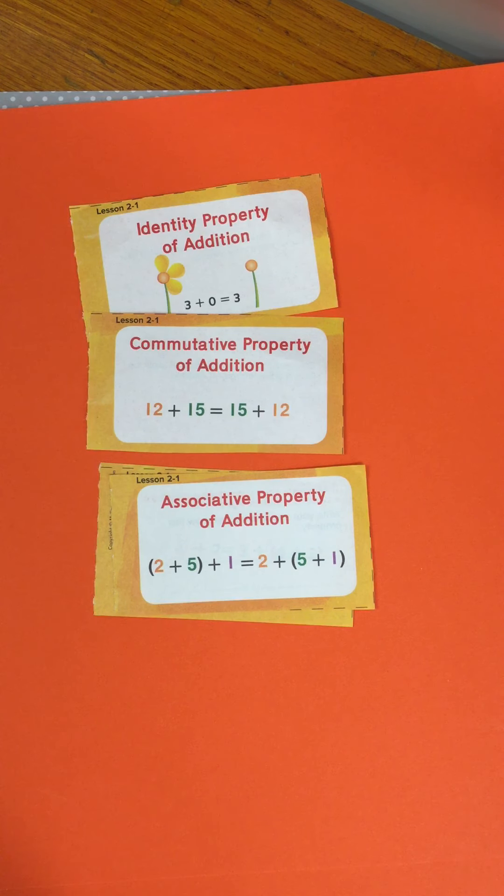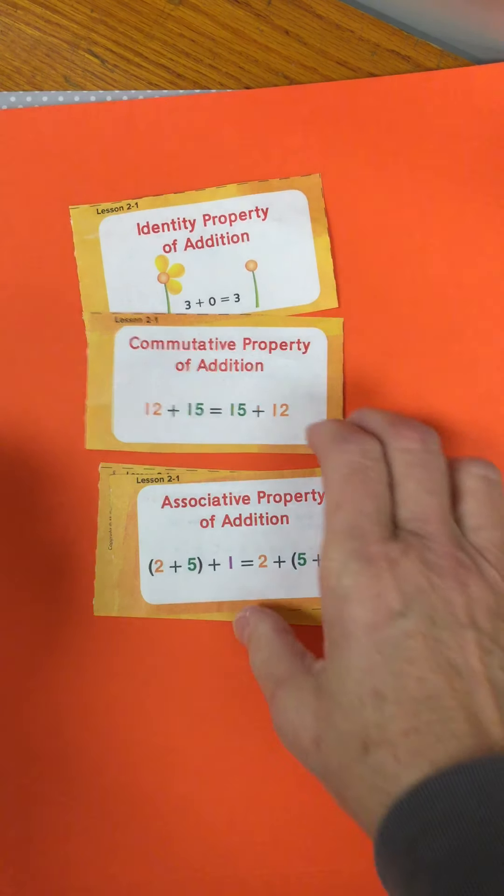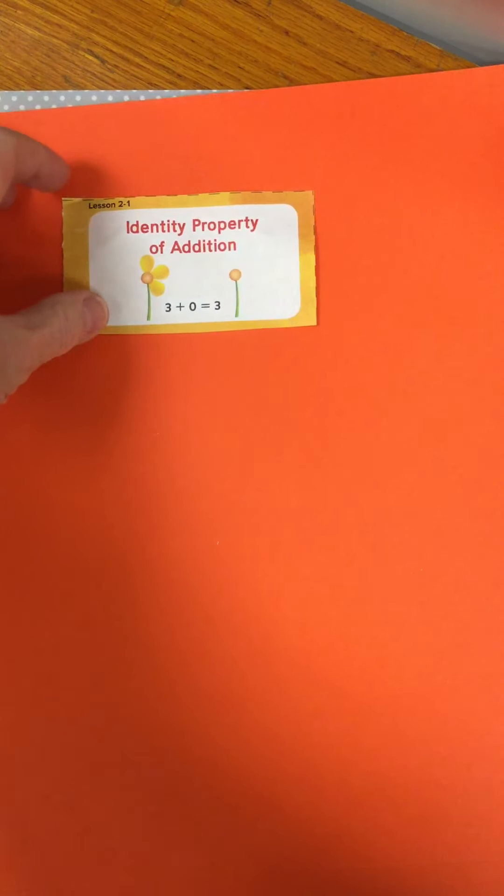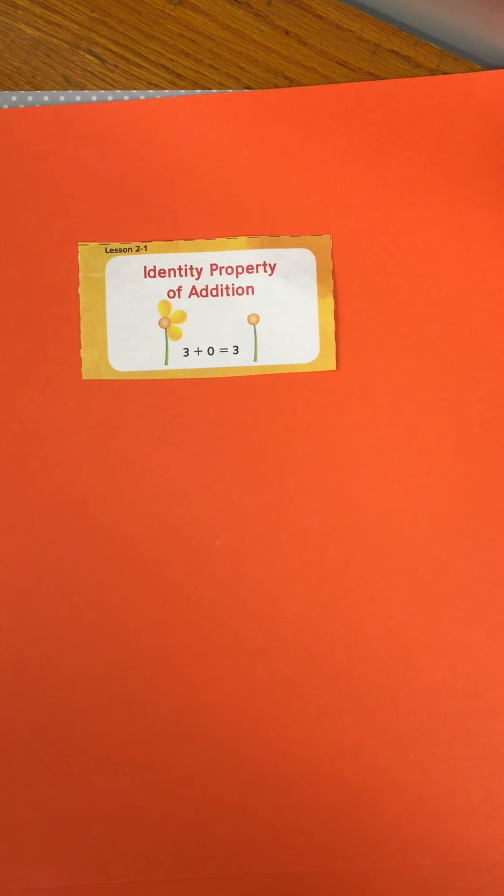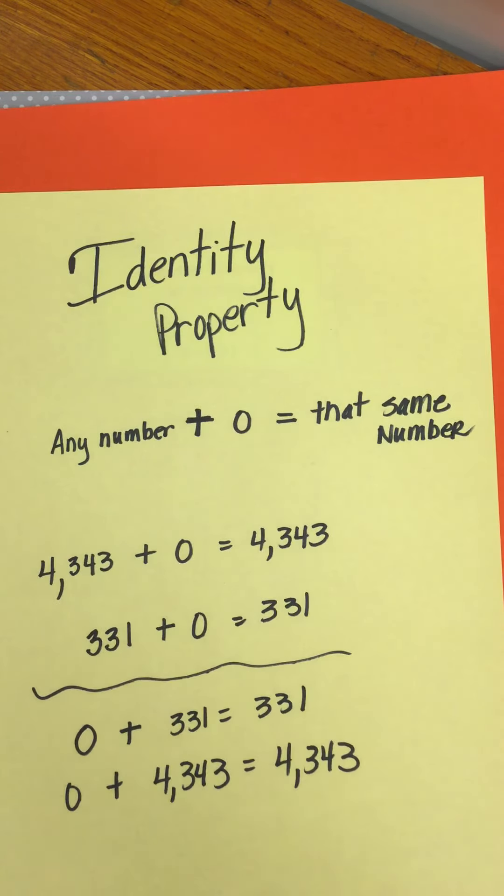Hi boys and girls. Today I'm going to go over the properties of addition one more time. I'll start with what I think is the easiest one and it's the identity property of addition and it involves the zero.